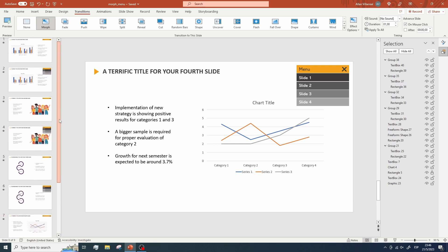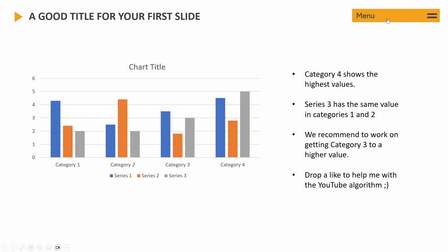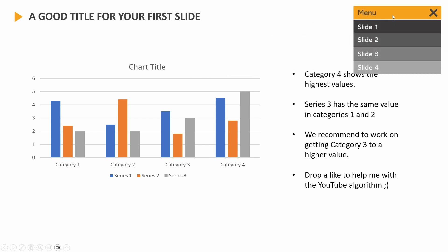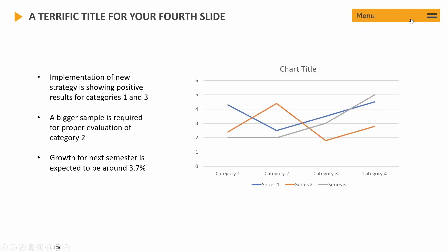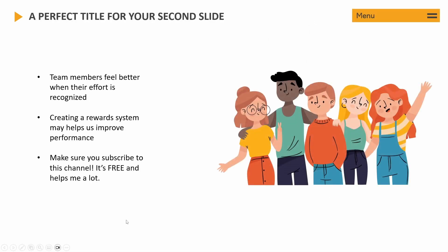Now let's go back to the first slide and open the presentation to verify everything works. Whenever I click on the menu title, the menu opens, the icon transforms into an X showing the menu is open, and I can click on any element to navigate to the corresponding slide easily. That's it for this video — thank you for watching, don't forget to subscribe and hit the bell icon, take care and see you next time.